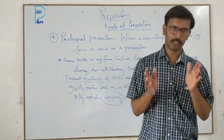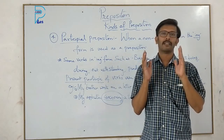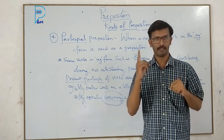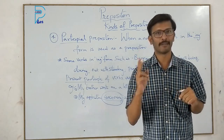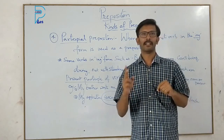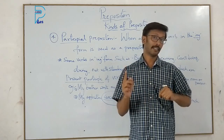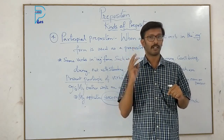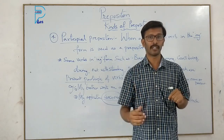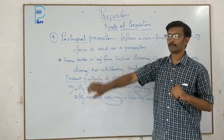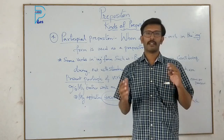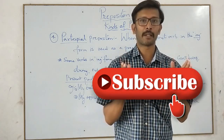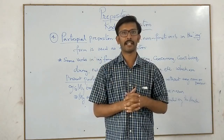In this video we learned what prepositions are and their kinds. There are four kinds: first, simple preposition; second, compound and double preposition (two types within this); third, phrasal preposition; and fourth, participial preposition. For more videos, please subscribe to our YouTube channel and press the bell button. Thank you.